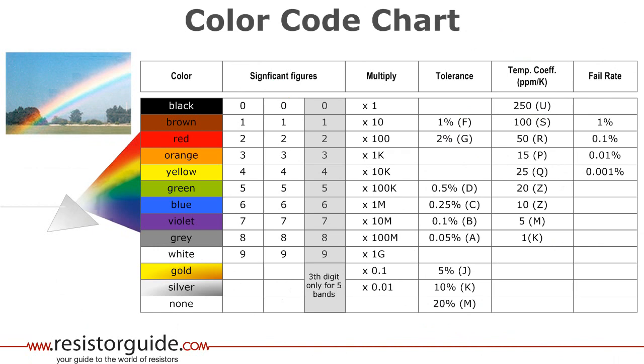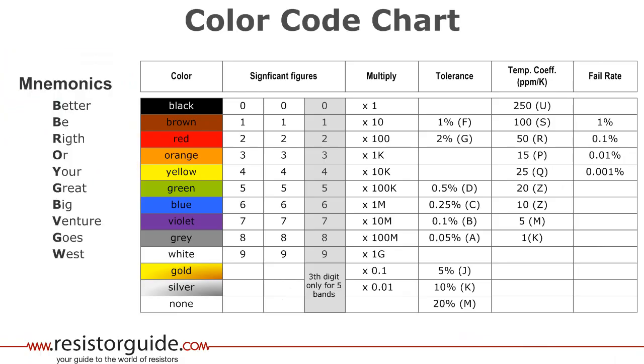Another way to remember the sequence of colors is to use the so-called mnemonics. An example is better be right or your great big venture goes west. Many variations exist. Some more memorable than others and some might not be appropriate for classroom use.